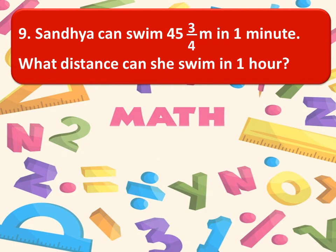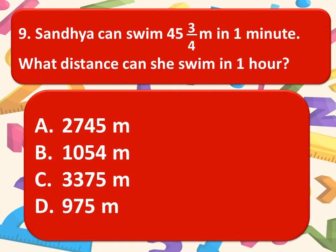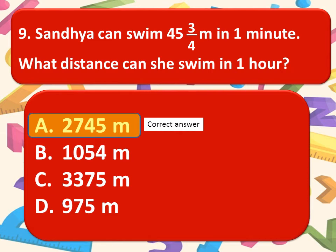Sandhya can swim 45, 3 by 4 meter in 1 minute. What distance can she swim in 1 hour? Here are the options. Choose your correct answer. And the correct answer is option A. 2,745 meters.